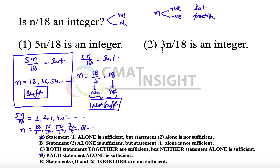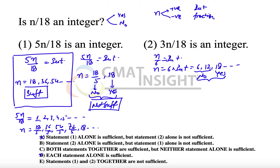The second statement tells us 3n/18 is an integer, meaning n/6 is an integer, so n is an integer multiple of 6. The values of n can be 6, 12, 18, etc. While 18 gives a 'yes' answer to the question, the other values give 'no.' Therefore the second statement alone is also not sufficient, and that option is eliminated.